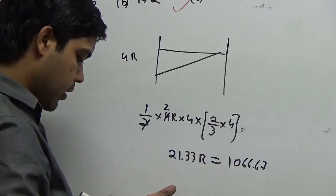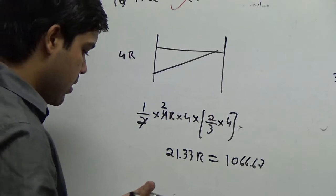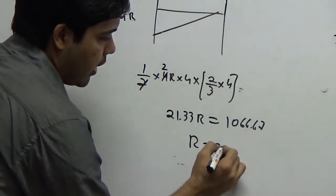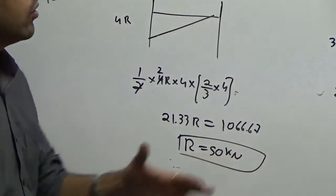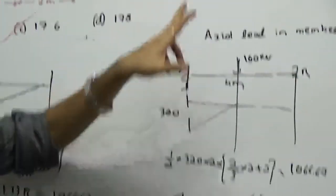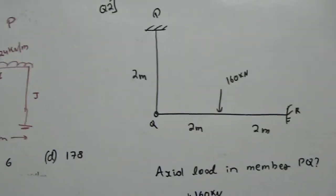Your answer comes out to be 50. So 50 kN is the axial load for the member PQ. I hope there is no doubt in this. So the next problem.